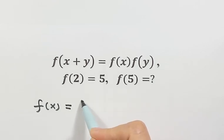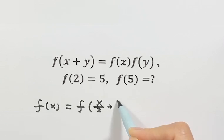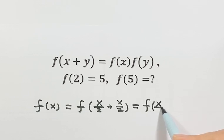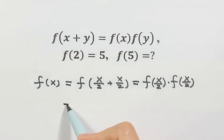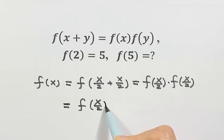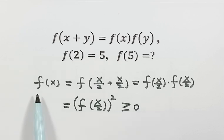So then for f(x), we can write it this way: x equals half of x plus half of x. Then from the first given condition, we can write f(x) as f(x/2) times f(x/2). So we have f(x/2) squared. Anything squared is bigger than or equal to 0. So that means f(x) is bigger than or equal to 0 for any real number x.